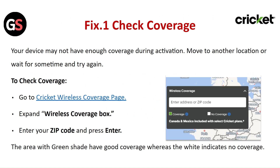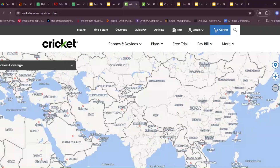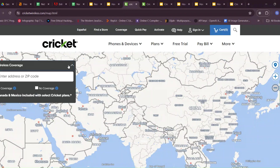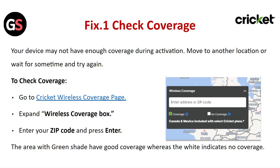Fix 1: Check Coverage. Your device may not have enough coverage during activation — move to another location or wait some time and try again. To check coverage, go to the Cricket Wireless coverage page, expand the wireless coverage box, enter your zip code and press Enter. Areas with a green shade have good coverage, whereas white indicates no coverage.